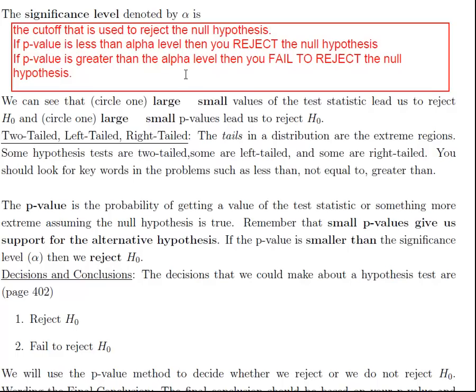So the alpha level is a cutoff. It's usually set at 0.05 but sometimes 0.01 or sometimes 0.1. If you get a p-value less than that, you reject the null. If your p-value is greater than your alpha level, then you fail to reject the null. Small p-values result in rejecting the null. But if you have a small p-value, then you have a large test statistic. Large test statistic will lead to a small p-value.